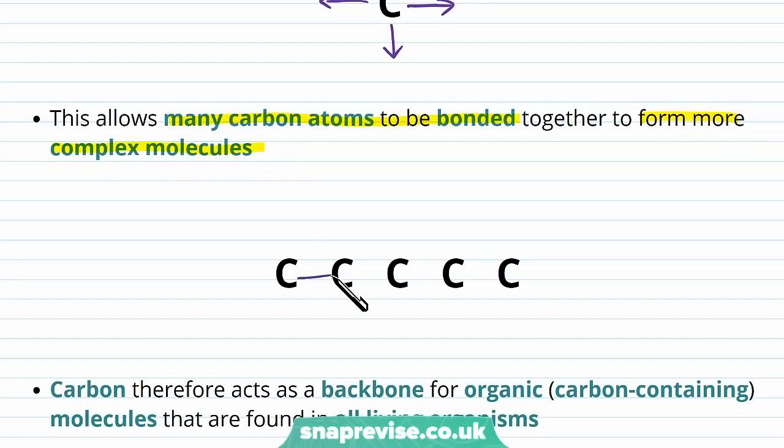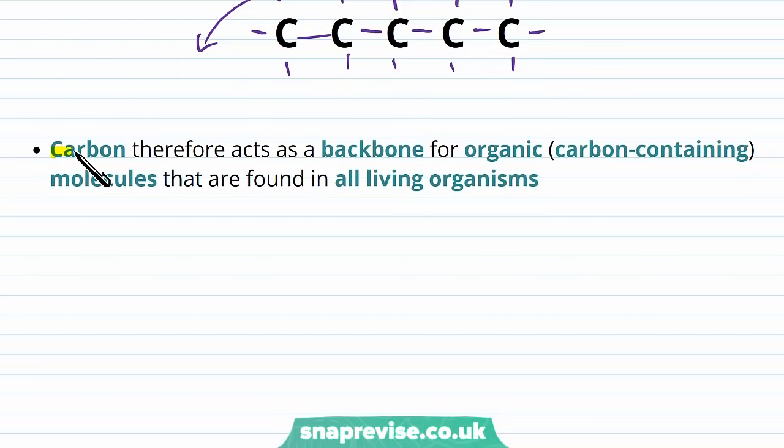And you can imagine that if they keep forming different bonds, each of them being allowed to bond to four things, then the ability to make a complex molecule, which could be very large, is very high. So we can make lots of different sizes of molecules based on carbon and it can join to lots of different chemical groups. And actually what we find is that carbon, as a skeleton like this, acts as a backbone for organic or carbon containing molecules.